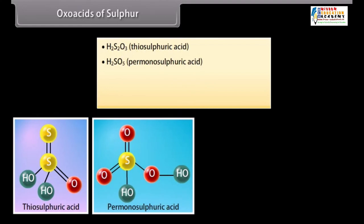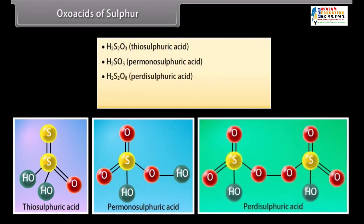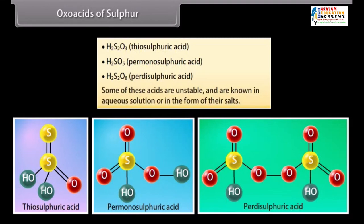H2S2O3 Thiosulfuric Acid. H2SO5 Permonosulfuric Acid. H2S2O8 Perdisulfuric Acid. Some of these acids are unstable and are known in aqueous solution or in the form of their salts.